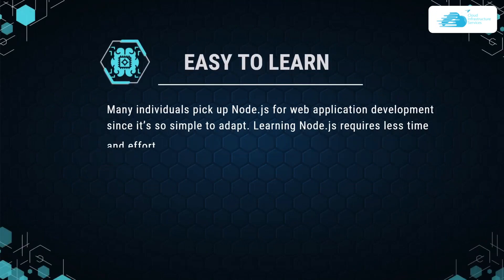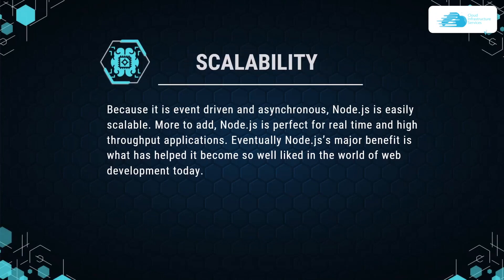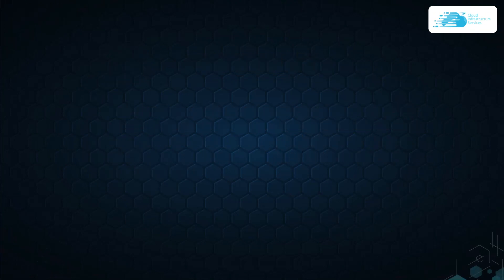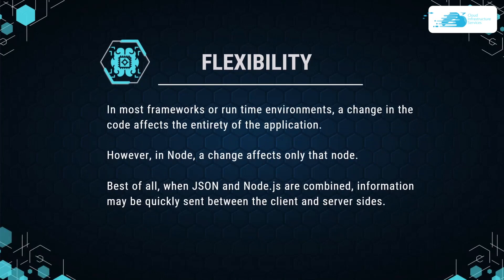The first pro of Node.js is that it is easy to learn. Many individuals pick Node.js for web application development since it is so simple to adapt, requiring less time and effort. We also have scalability — because it is event-driven and asynchronous, Node.js is easily scalable. Then we have flexibility. In most frameworks, a change in code affects the entire application; however, in Node.js, a change only affects one particular node. Best of all, when JSON and Node.js are combined, information may be quickly sent between the client and server sides.